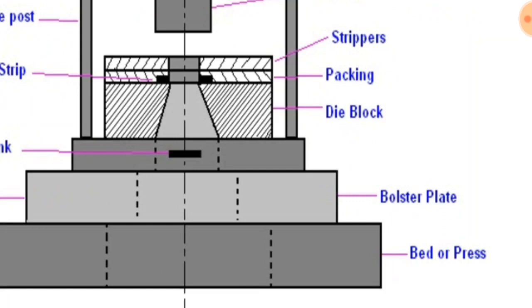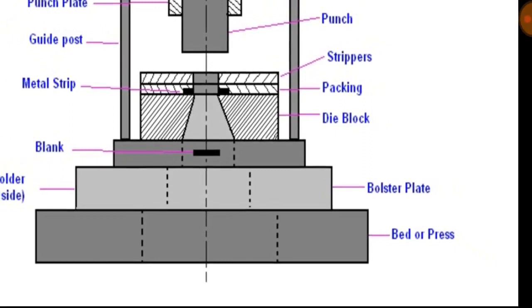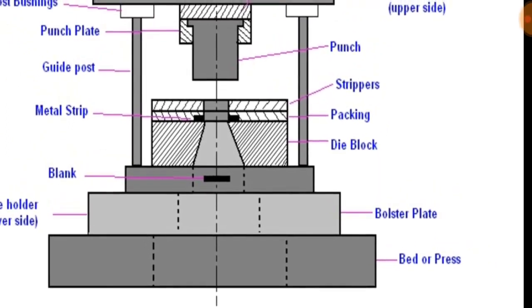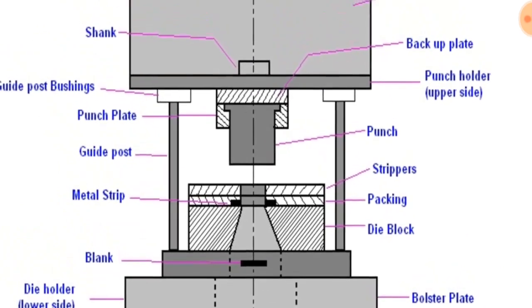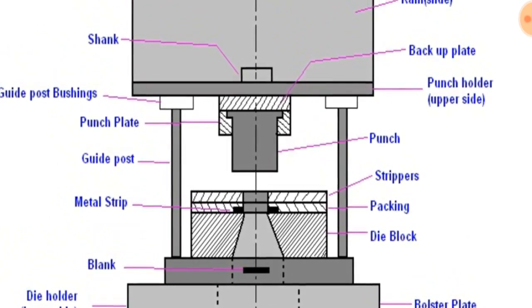So what is bolster plate? Bolster plate is a thick plate secured to the press bed which is used for locating and supporting the die assembly. It is usually 5 to 12.5 cm thick. Die set: it is a unit assembly which incorporates a lower and an upper shoe, two or more guide posts, and guide post bushings.